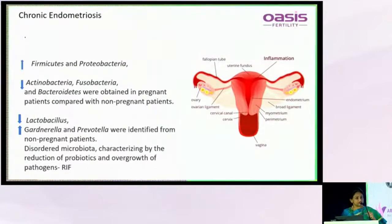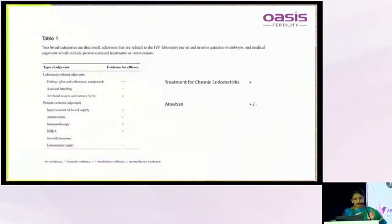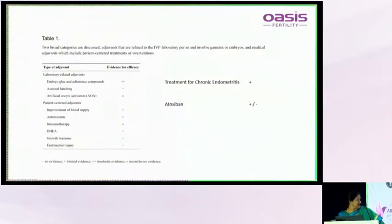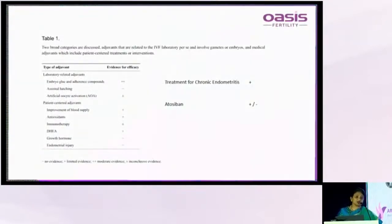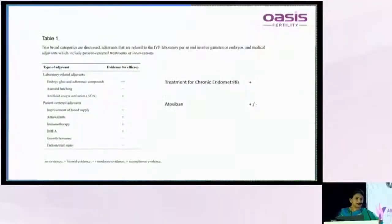In chronic endometritis, the natural vaginal flora is disturbed — lactobacilli are reduced and pathogenic bacteria are elevated, leading to lower pregnancy rates. In summary: embryo glue works; assisted hatching does not; artificial oocyte activation is still unclear. Vasodilators such as G-CSF, sildenafil, vitamin E, and aspirin are used when there is thin endometrium or poor vascular supply, and these do seem to make a difference in terms of implantation.